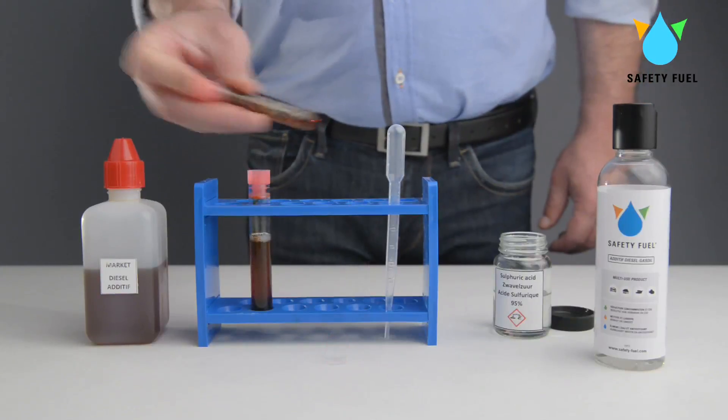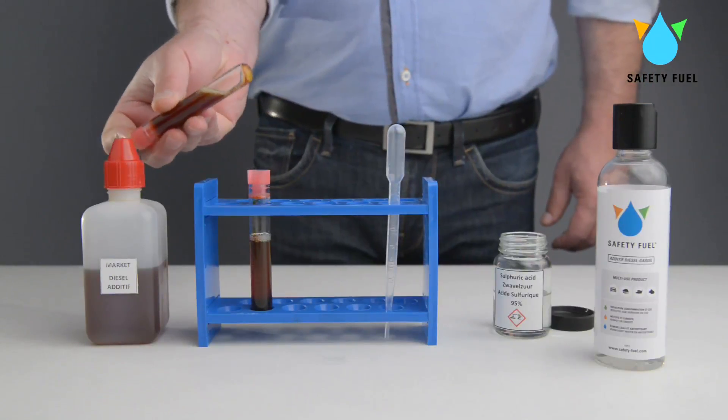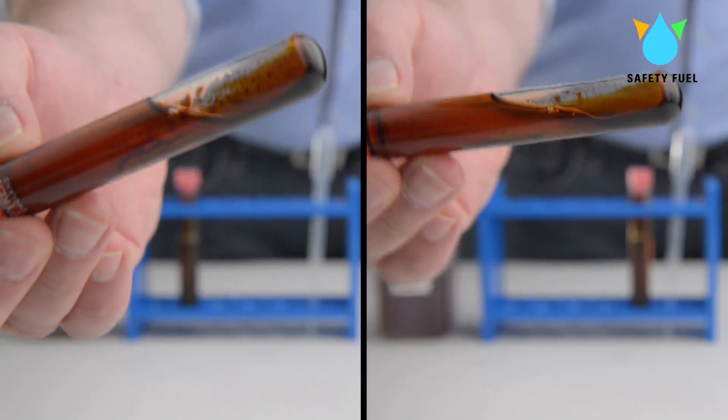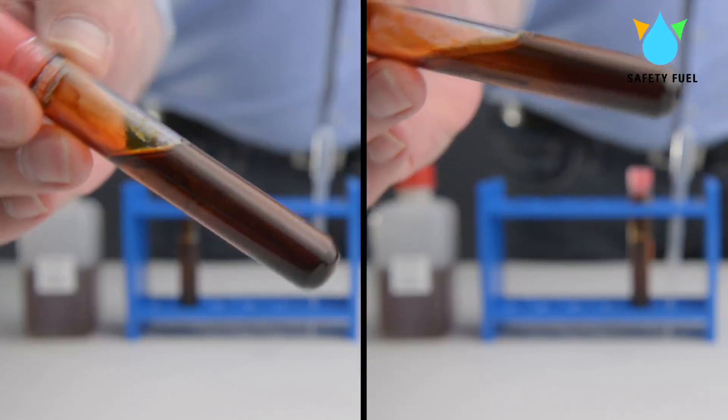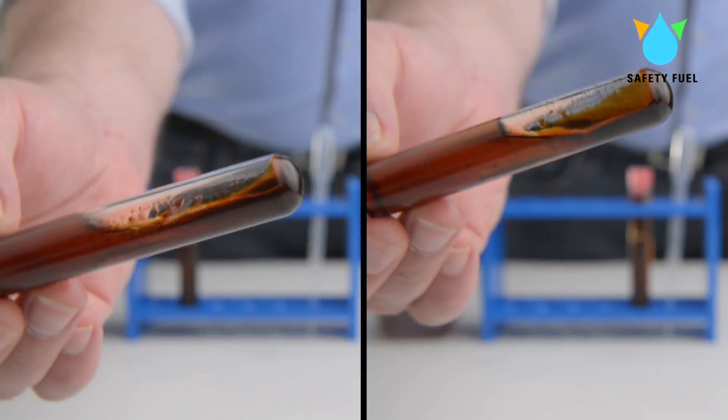We shake both test tubes. This simulates in an accelerated manner the oxidation as it occurs in the engine. We note that both mixtures in the test tubes turn black.